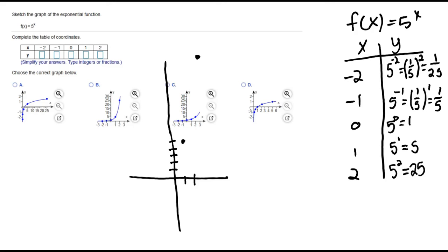And then 0, 1. Negative 1 and a fifth. A fifth is 0.2, which is getting pretty close to the x-axis. We have negative 2 and 1/25, that's even closer to the x-axis.